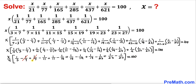Now we can see that negative 1/7 and positive 1/7 cancel, and similarly all intermediate terms cancel each other out. This telescoping series completely collapses, leaving us with x/4 times (1/3 - 1/27) equals 100.